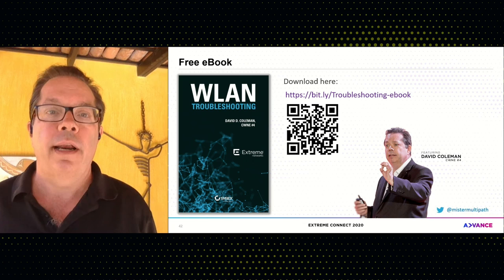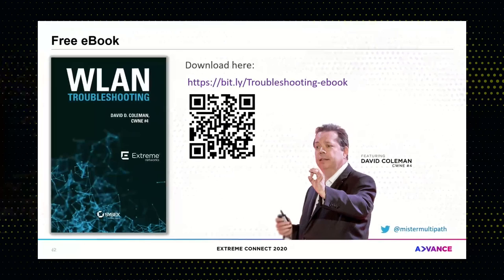As we wrap things up, there's a free e-book I wrote about this topic called Wireless LAN Troubleshooting. You can download it for free — hold your smartphone up to the QR code shown here, or type in the URL to your browser, and you'll be able to download an 80-page booklet about the subject matter of this presentation. I'd like to thank everybody for attending this presentation and for attending Xtreme Connect. My name is David Coleman, and we hope to see you again soon.